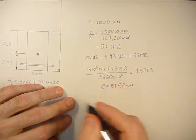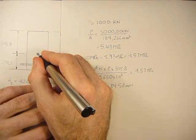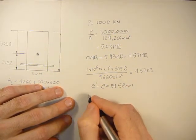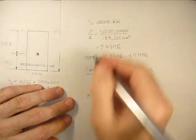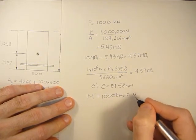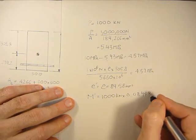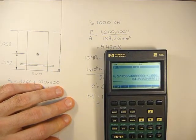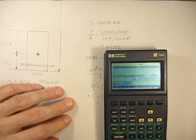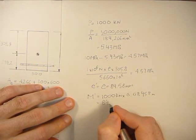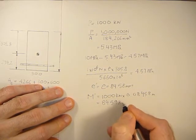This E is already about the centroidal axis, so it also coincides with the E prime. So the M prime will be the axial load, 1,000 kilonewtons, times 0.08458 meters, which gives us 84.59 kilonewton meters.